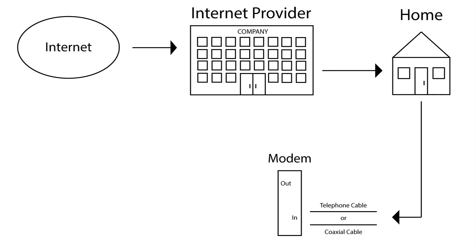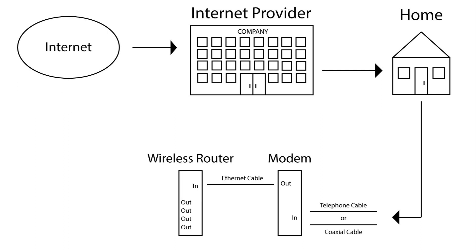This translated data travels from the modem to the router via an ethernet cable. If the router has wireless capabilities, it will broadcast this data throughout your home or office where it can be read by nearby computers.